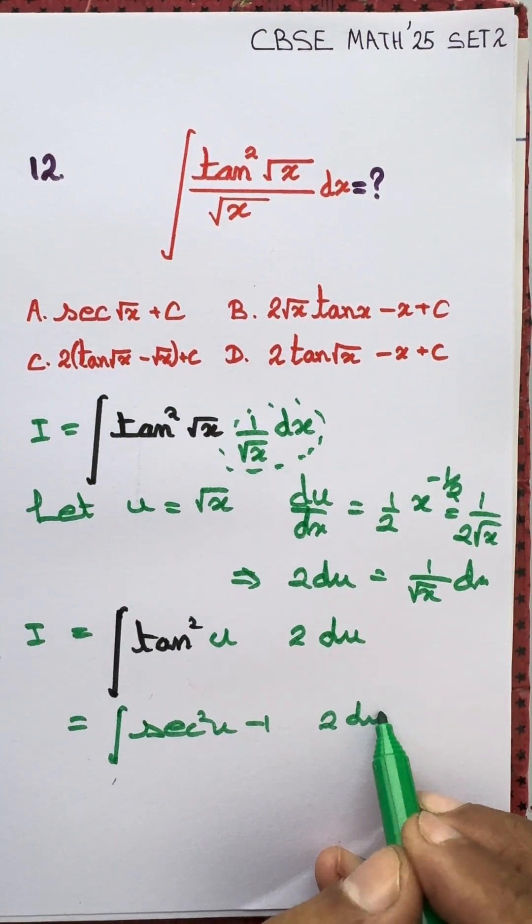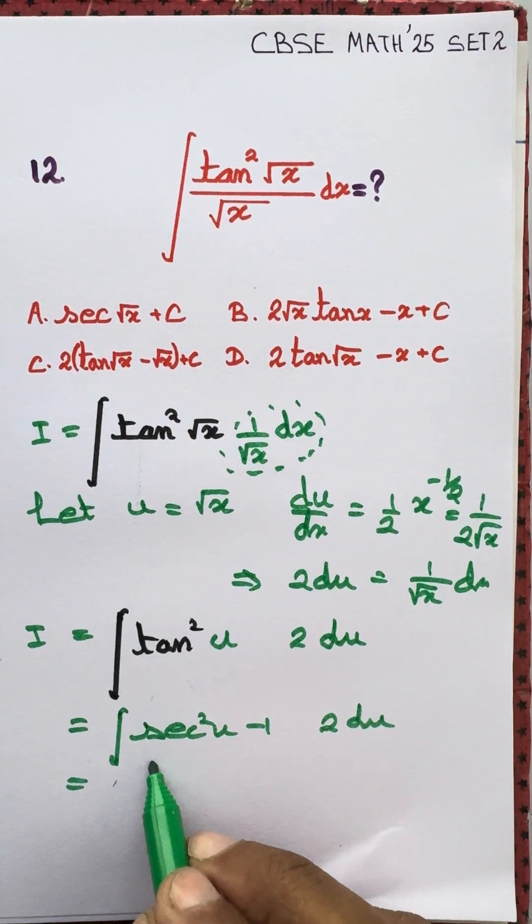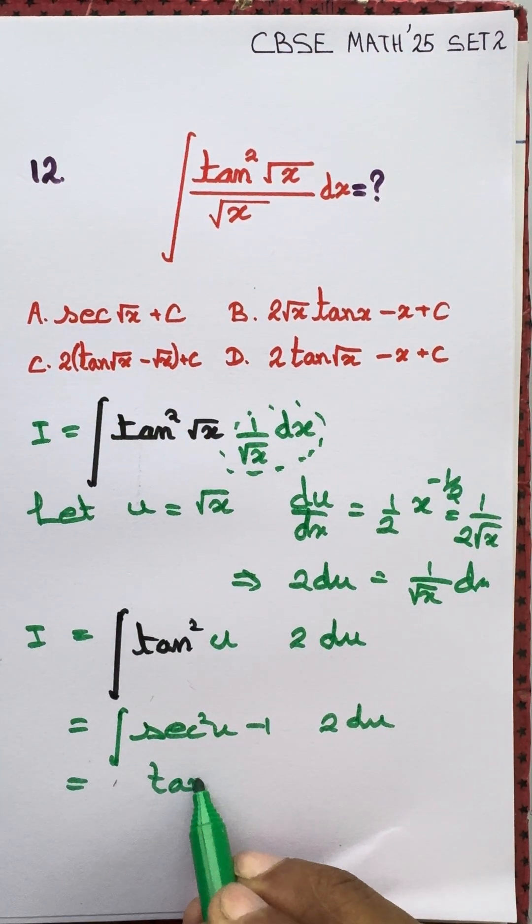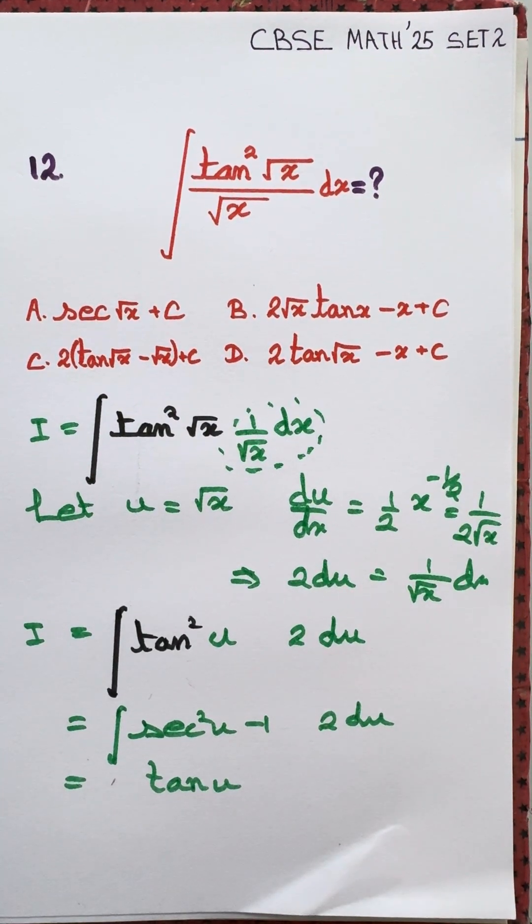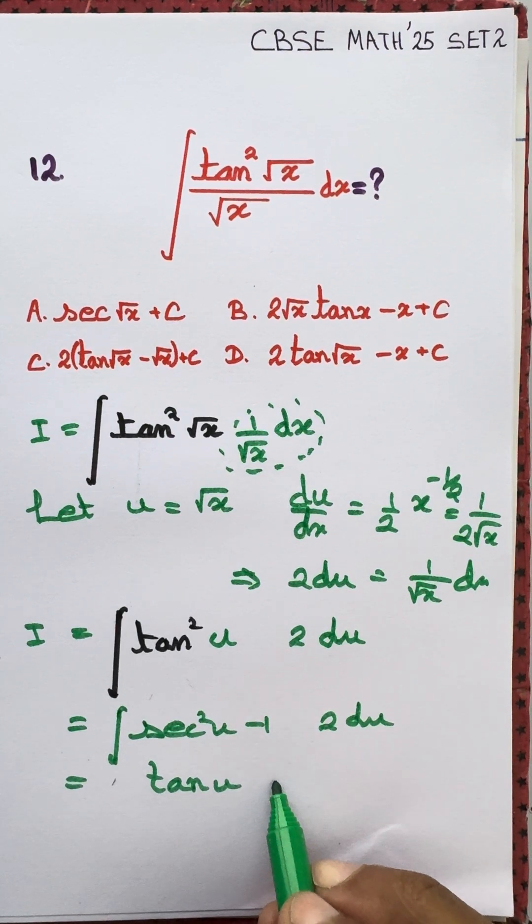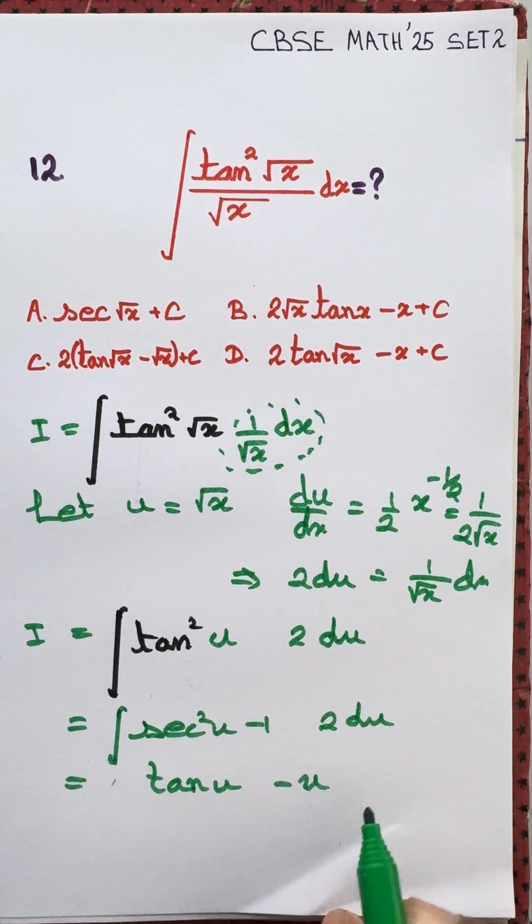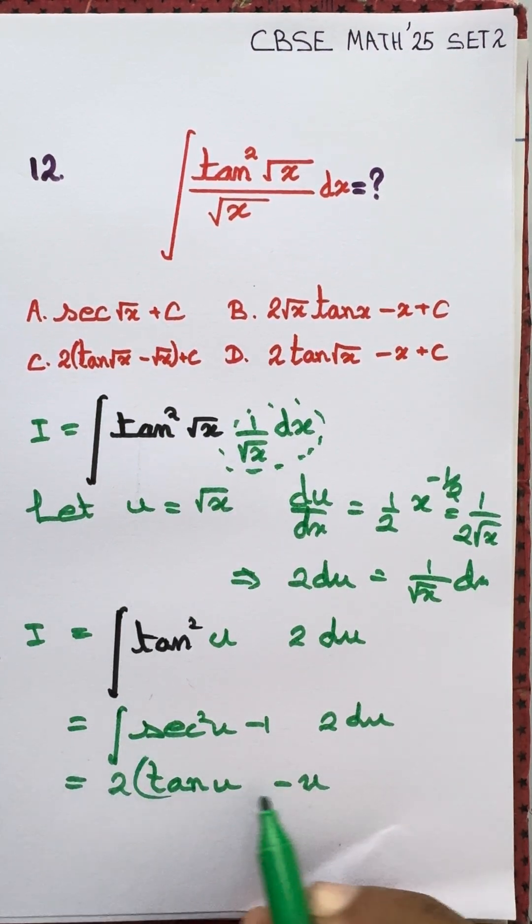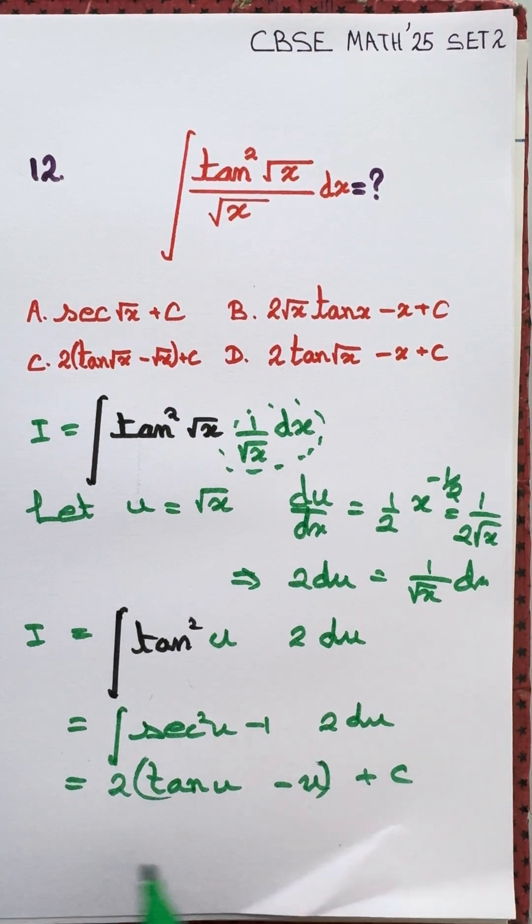Two du as it is, and sec squared is derivative of tan, or in other words, integral of sec squared u is tan u. What about one? Integral of one is u. Two, that's just a constant, plus some constant of integration.